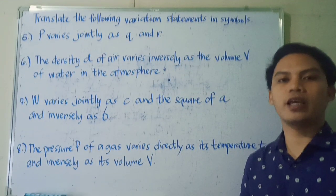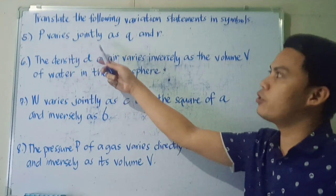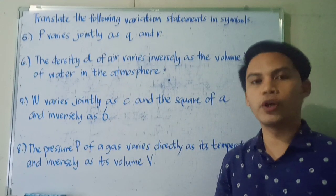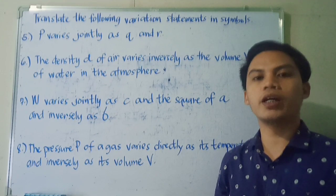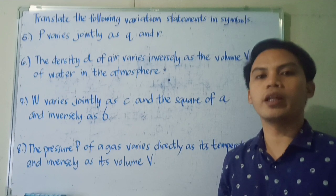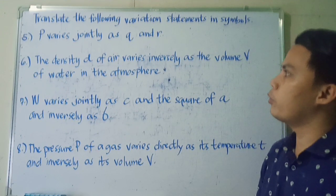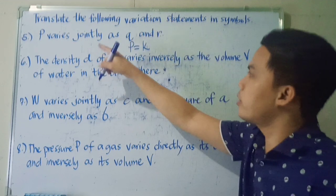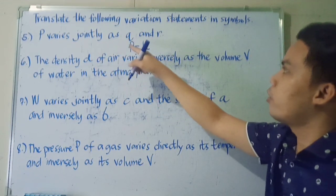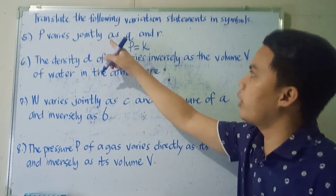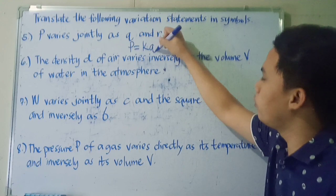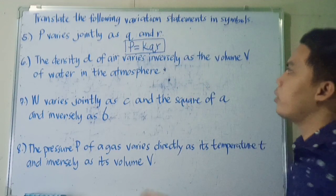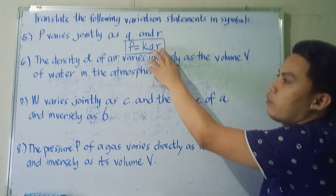Let's have now the last set of our examples. So we have number 5. P varies jointly as Q and R. So when we say jointly, it means that we're going to use joint variation. So in joint variation, it's like direct variation. But our independent variables are more than 1. So in this case, we're going to write P equals K, our constant. And it says varies jointly as Q and R. So that means it varies directly as Q and R. So we have Q and R. So it's like direct variation, but this time, there are two or more than 1 variables used.